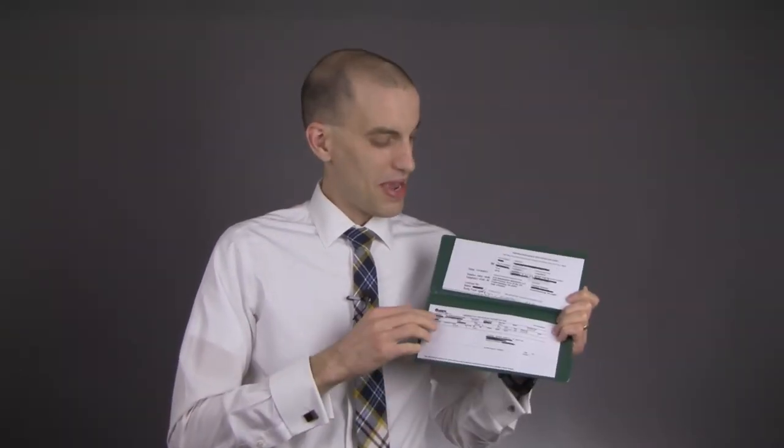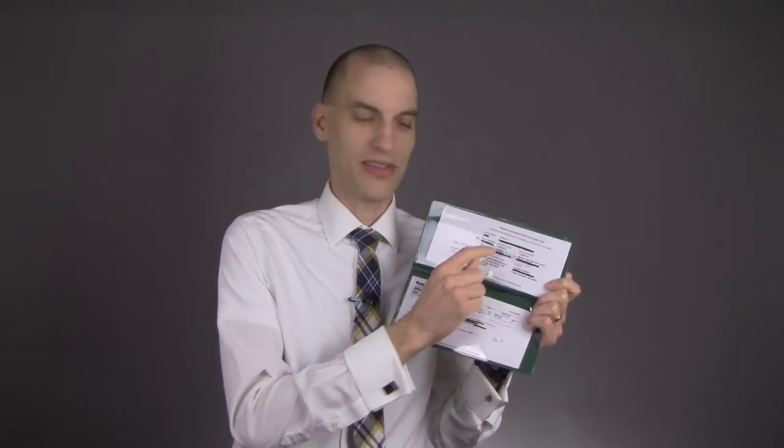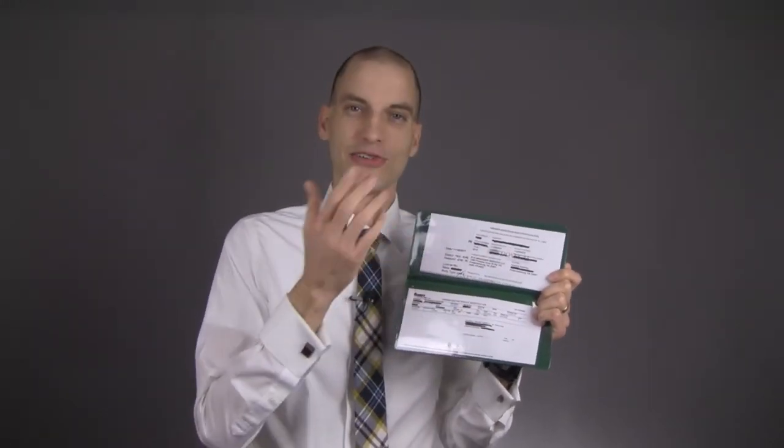So what are the four things you need to have when you're driving? A, you've got to have your driver's license. Simple. B, you've got to have your registration for your vehicle. C, you need your insurance liability card. And then finally D, your inspection. All these things should be in your vehicle at all times.